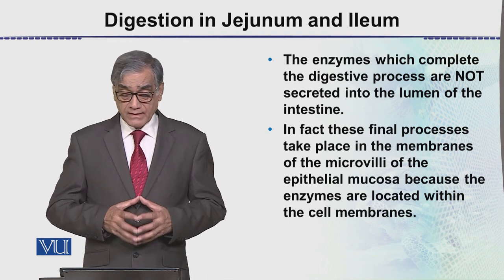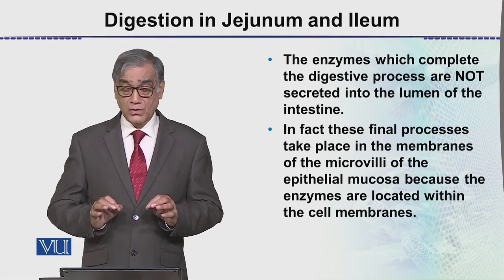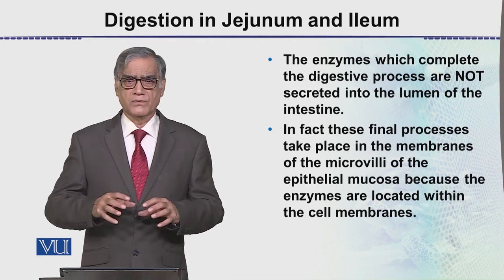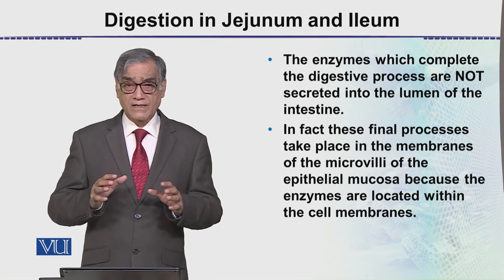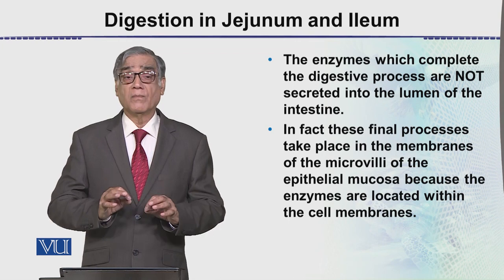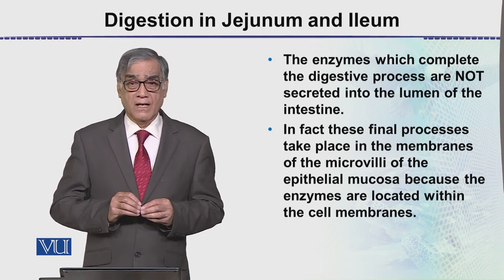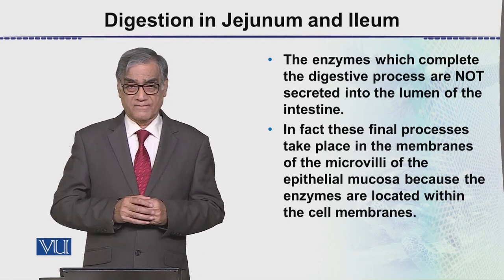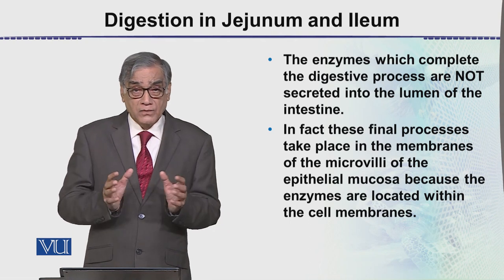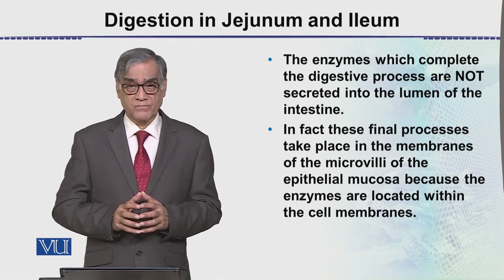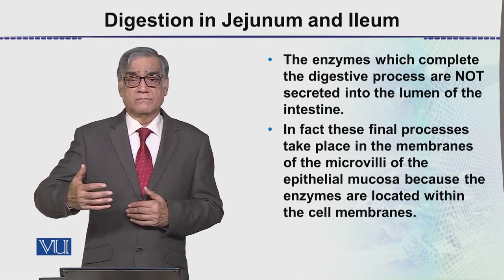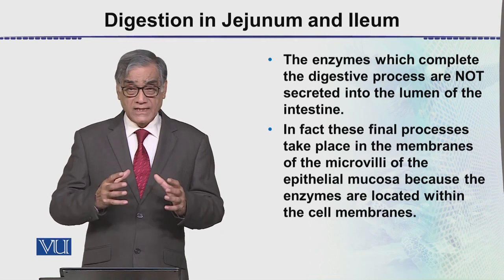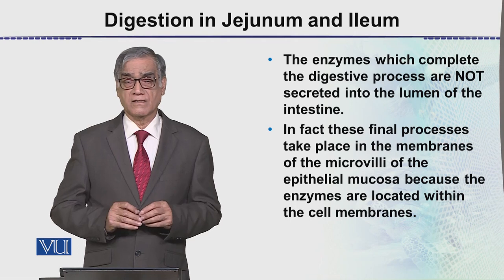Now, the enzymes which complete the digestive process are not secreted into the lumen of the intestine — this is very important. Enzymes do not directly enter the lumen and mix with food. Instead, these enzymes are entangled or embedded within the microvilli of the cells, within the cell membrane. A molecule like maltose comes to that enzyme, and the enzyme converts it into glucose.